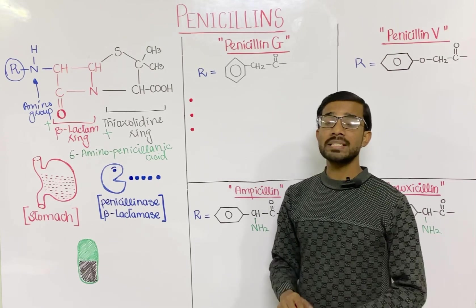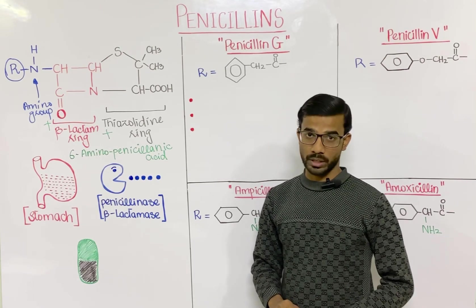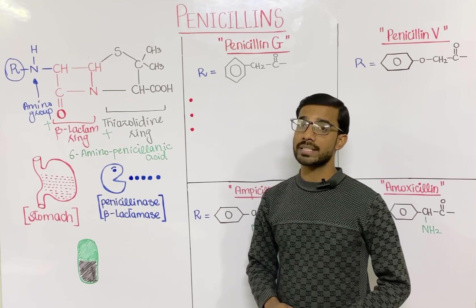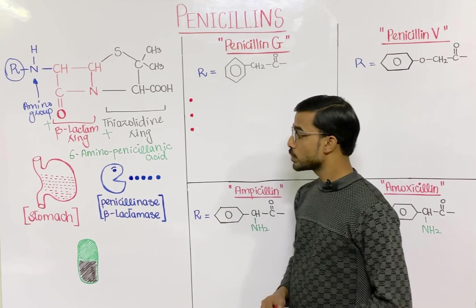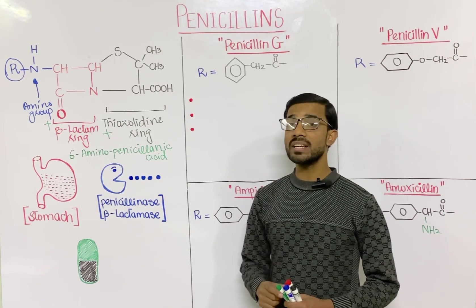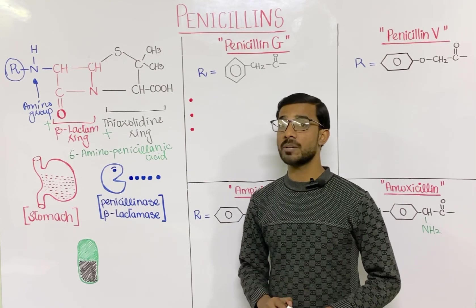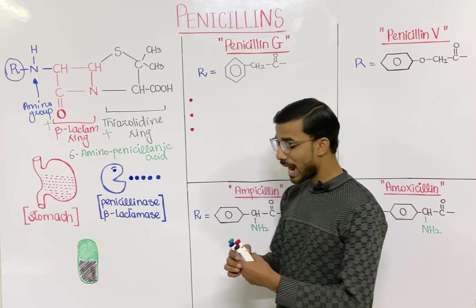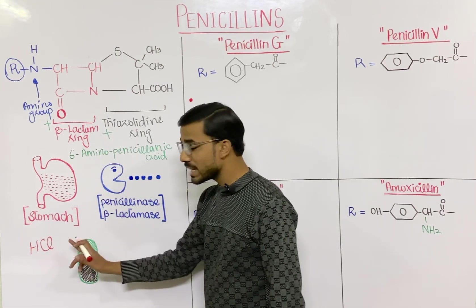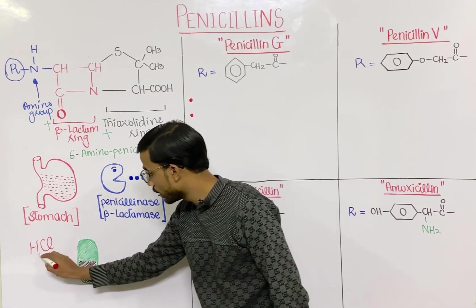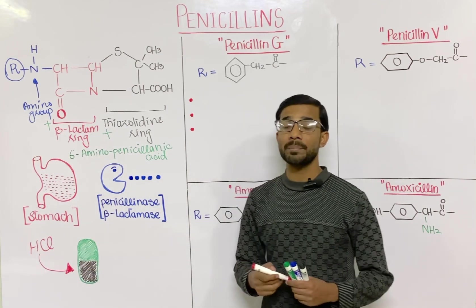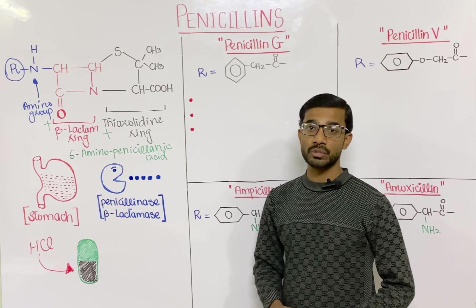Penicillin is actually susceptible to two important components. One component comes from the human body and the second from bacteria. When penicillin is taken through the oral route, it is destroyed by the acid produced in our stomach — HCl destroys the penicillin. This means that penicillin is susceptible to stomach acid.